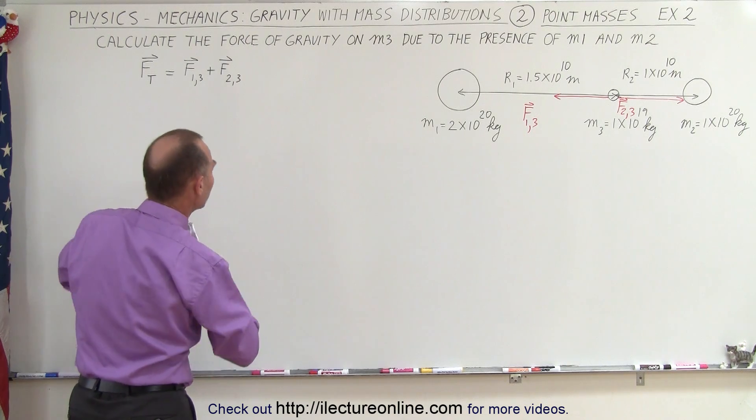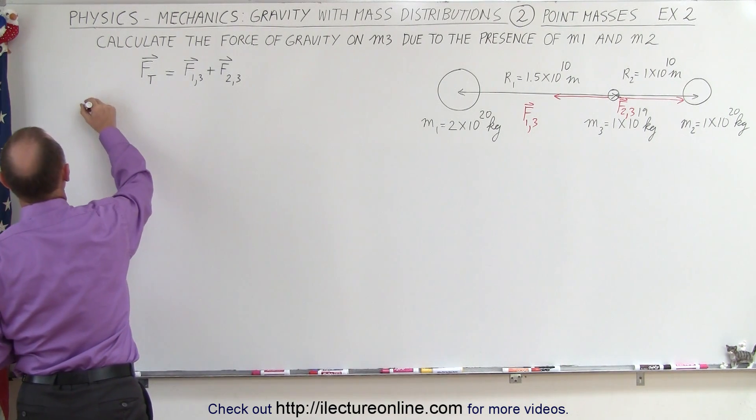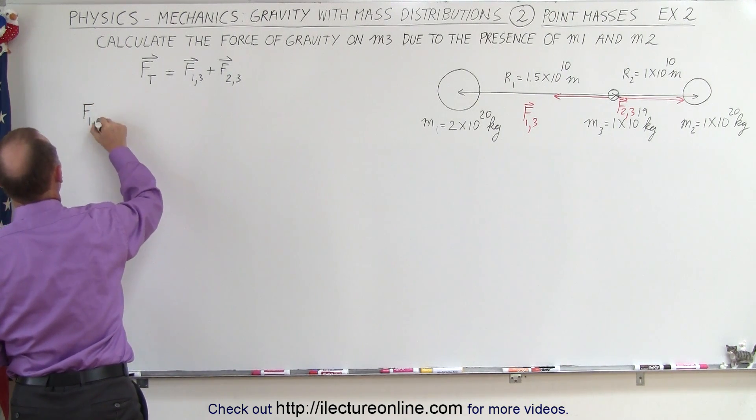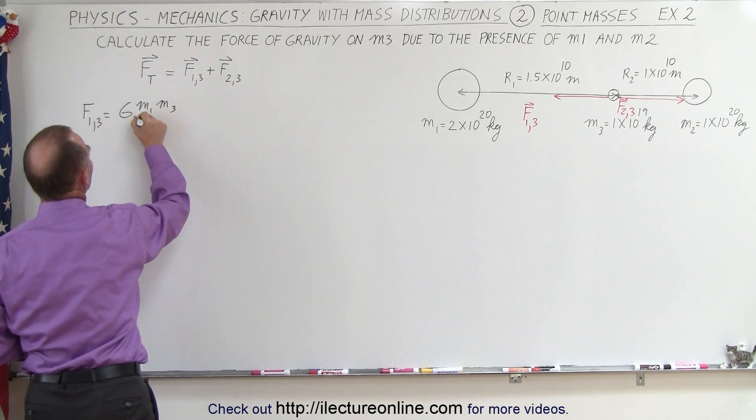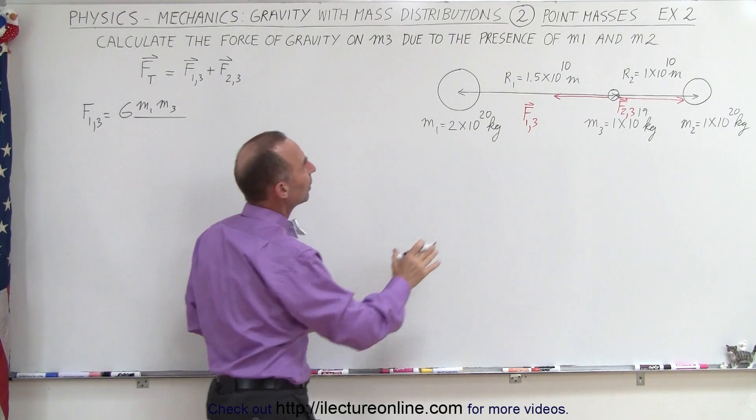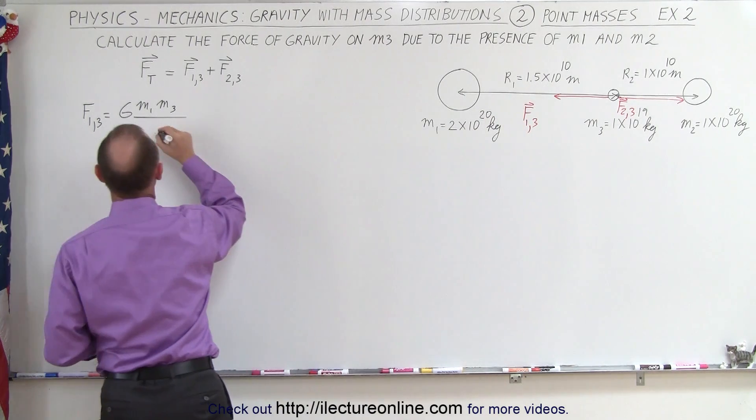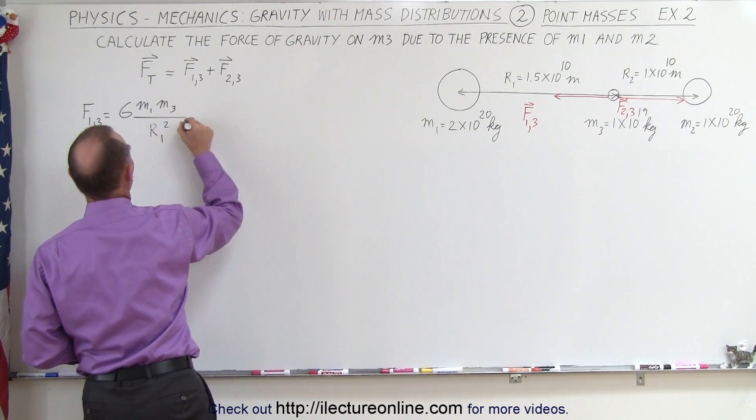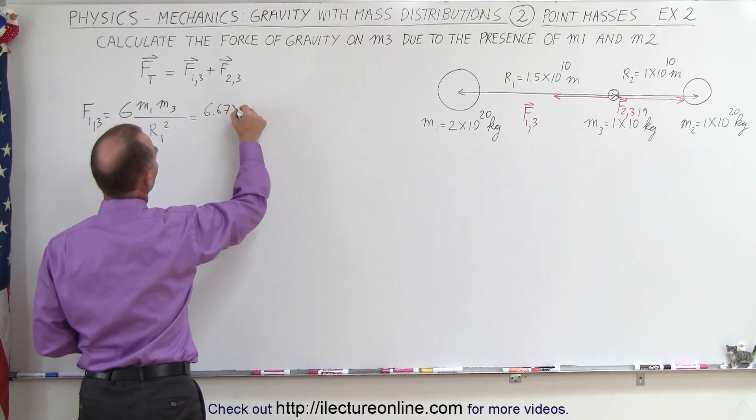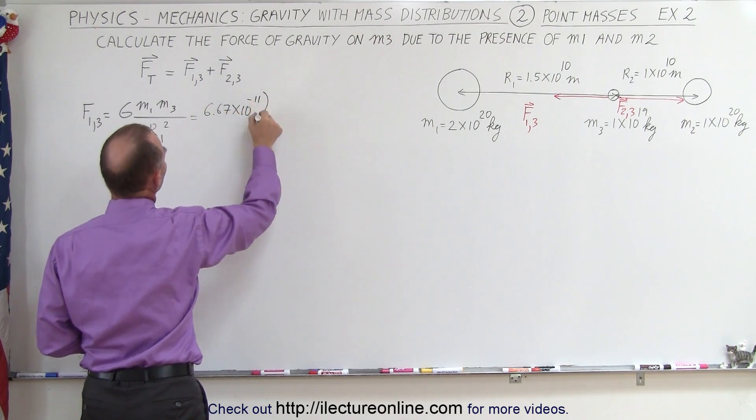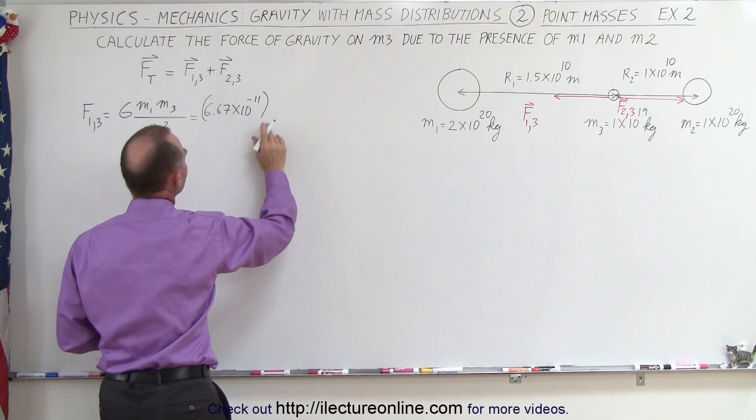So the magnitude of the force between 1 and 3 can be written as follows: G m1 m3 divided by the distance between them, which is r1 quantity squared, so r1 squared. Plug in the numbers, we get 6.67 times 10 to the minus 11, and we'll leave out the units to make it a little bit cleaner.